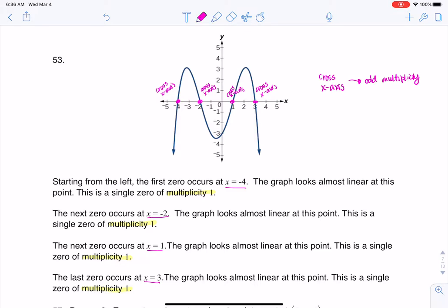And just to give you a little counter example, if you pass through the—or not pass through—if you bounce off the x-axis, that's when you would have an even multiplicity.